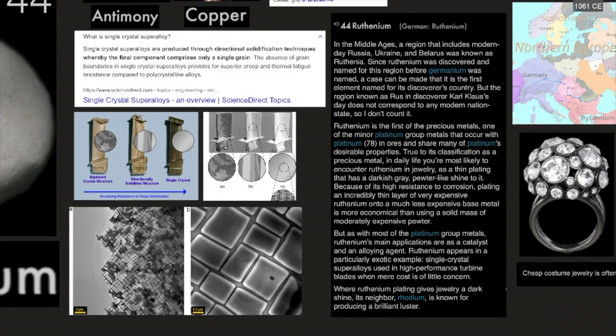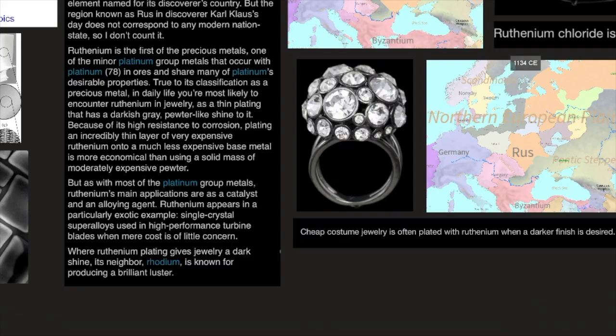Ruthenium is the first of the precious metals, one of the minor platinum group metals that occur with platinum, element number 78, in ores, and share many of platinum's desirable properties. True to its classification as a precious metal, in daily life, you're most likely to encounter Ruthenium in jewelry as a thin plating that has a darkish gray, pewter-like shine to it. Because of its high resistance to corrosion, plating an incredibly thin layer of very expensive Ruthenium onto a much less expensive base metal is more economical than using a solid mass of moderately expensive pewter.